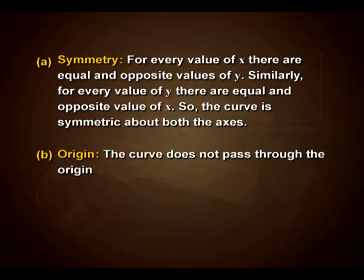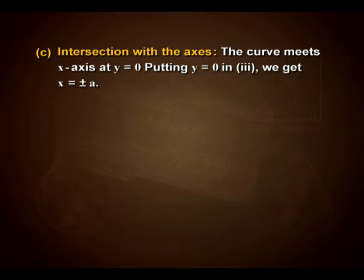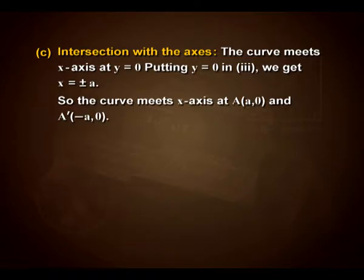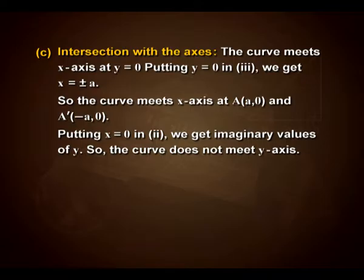The curve does not pass through the origin. Intersection with the axes: the curve meets the x-axis at y = 0; putting y = 0 we get x = ±a, so the curve meets the x-axis at A(a, 0) and A'(−a, 0). Putting x = 0 gives imaginary values of y, so the curve does not meet the y-axis.